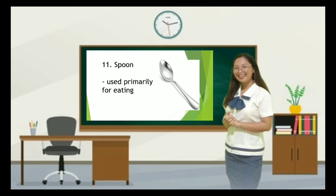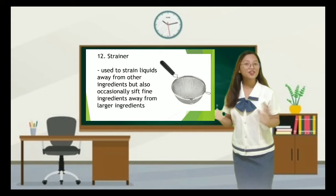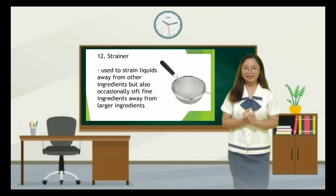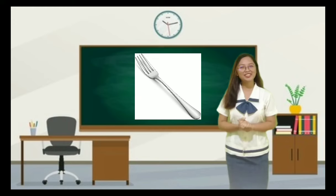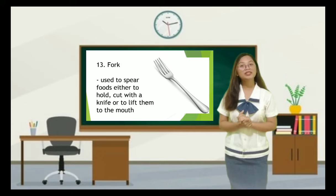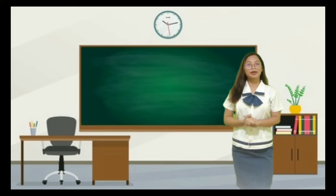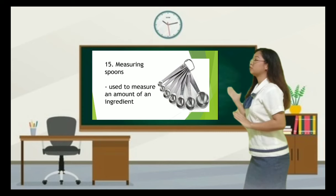Number eleven is a spoon, used primarily for eating. Number twelve is a strainer, used to strain liquids away from other ingredients, or occasionally to separate ingredients from larger ones. Number thirteen — it is a fork, used to spear foods to hold them while cutting with a knife, or to lift them to the mouth. Number fourteen is a wooden spoon, used for stirring sauces and mixing ingredients. Finally, number fifteen — measuring spoons, used to measure an amount of an ingredient, either liquid or dry, in cooking.